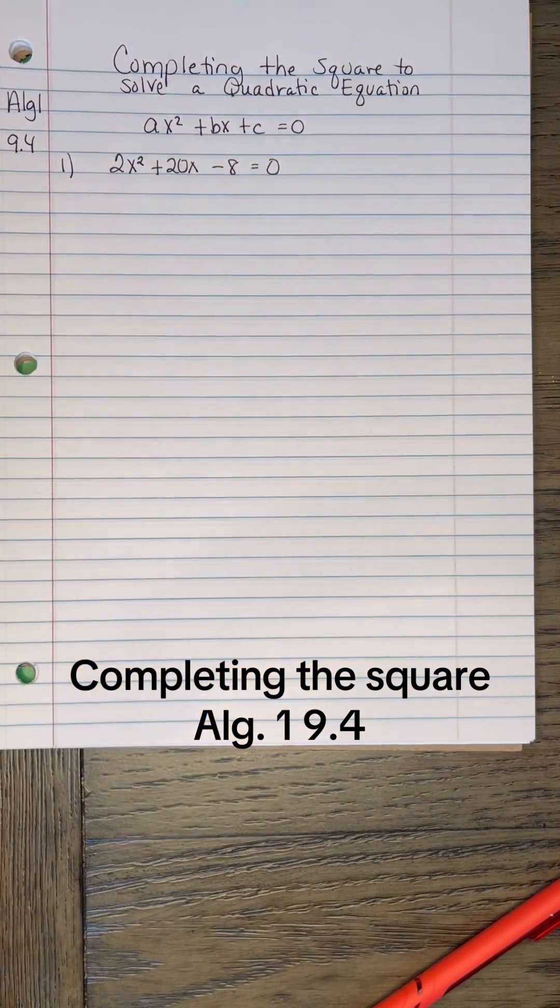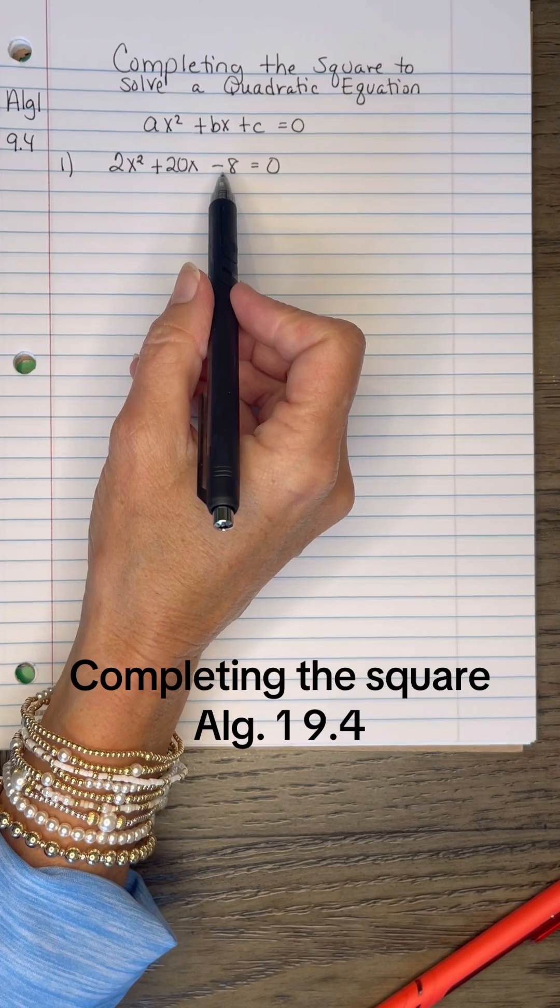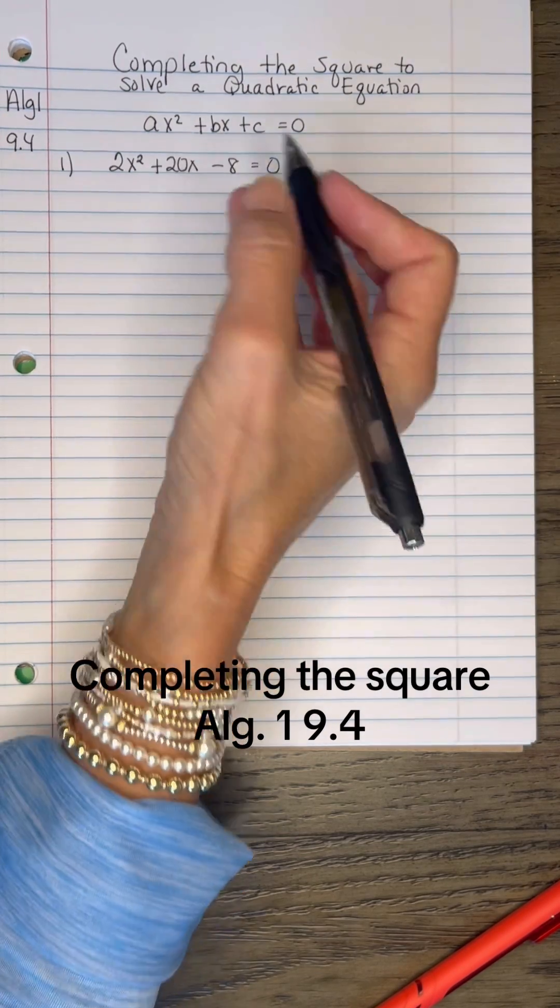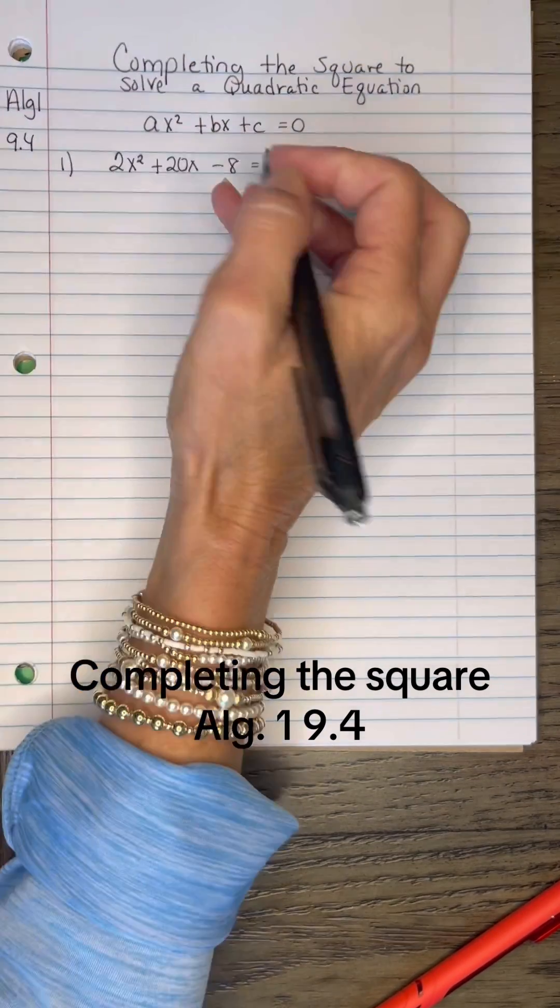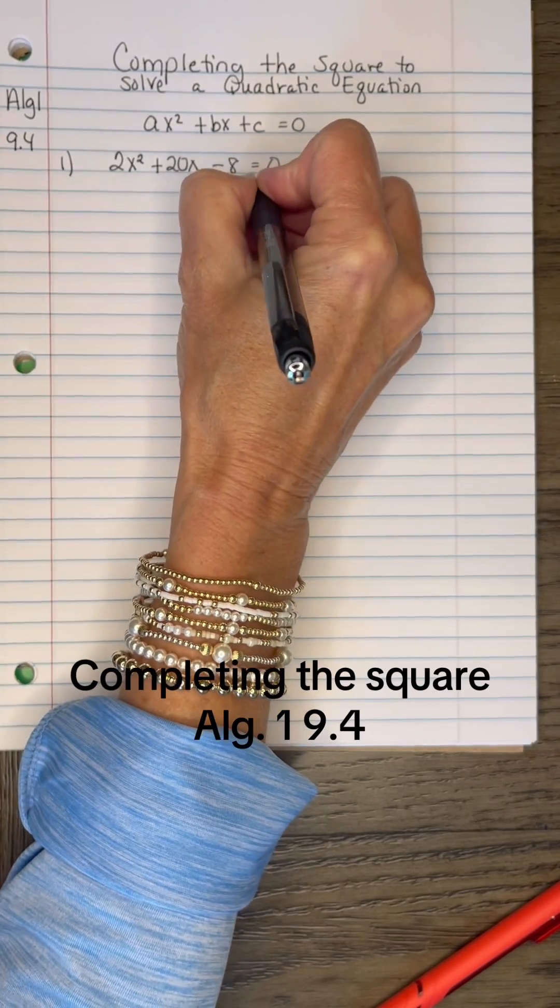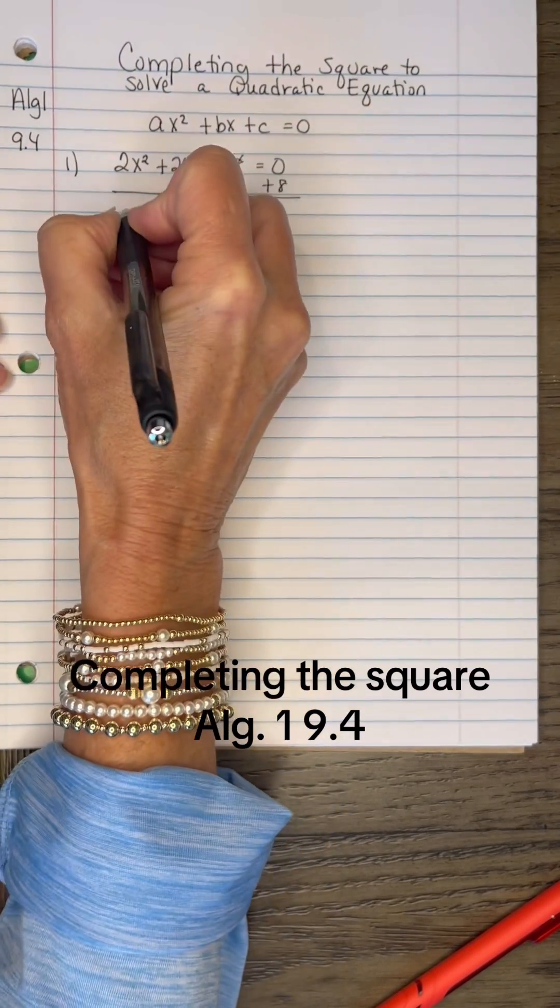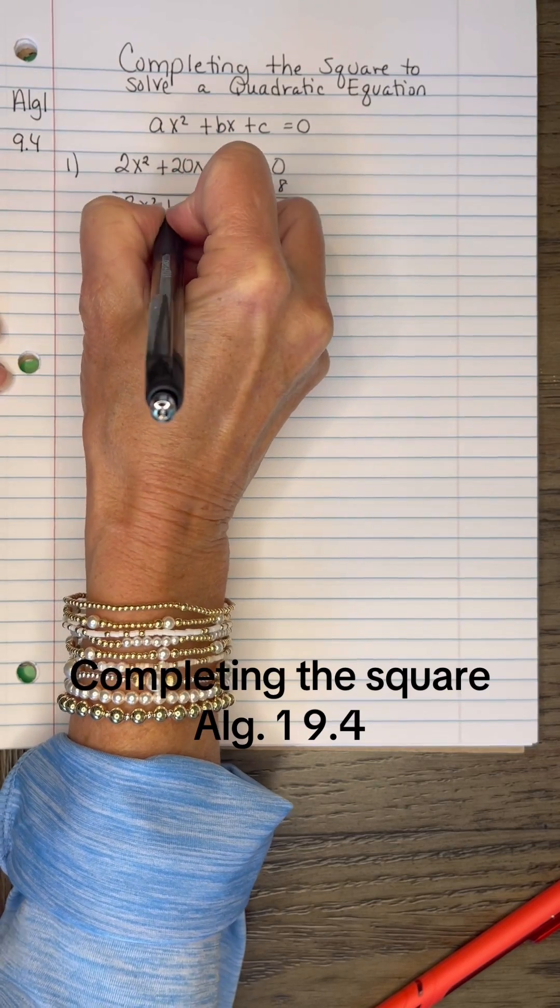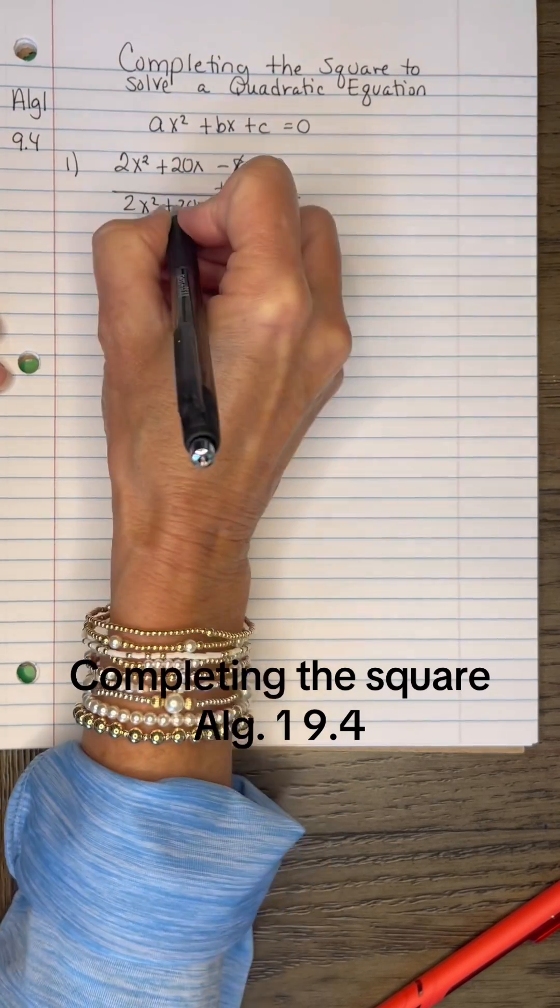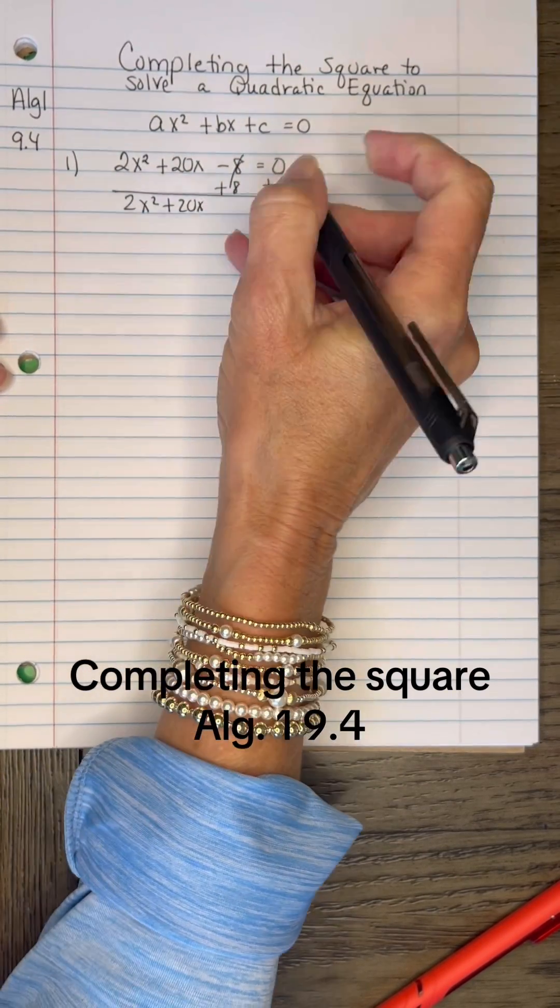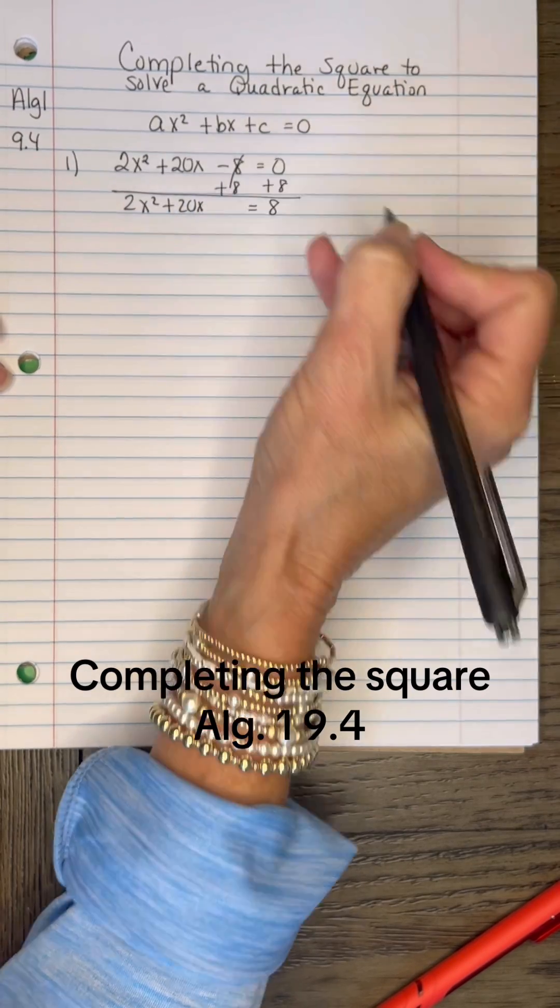I need to create a perfect square trinomial to complete the square. I need that 8 to the other side of the equation, so let's add 8 to both sides. We're left with 2X squared plus 20X. Leave a space for the C that's going to make it perfect, equals 8.